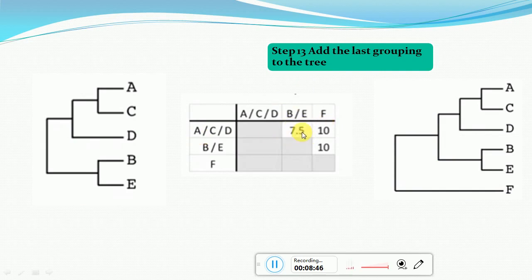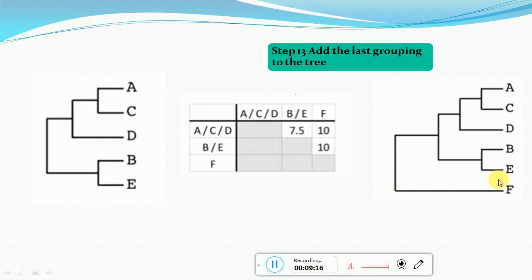Since the smallest value is 7.5 between ACD and BE, we can say BE is more closely related to ACD. We create a diagram showing BE related to ACD. The only remaining sequence is F. Since F shows similar distances from both ACD and BE, we place it such that it reflects similar differences from both groups. This completes the phylogenetic tree using the UPGMA method. Thank you, bye bye.